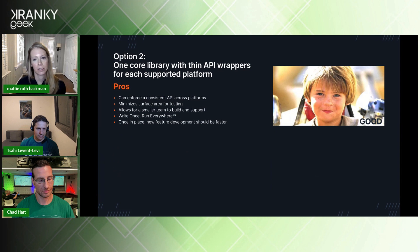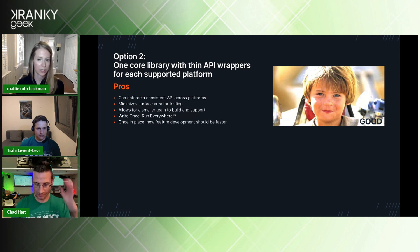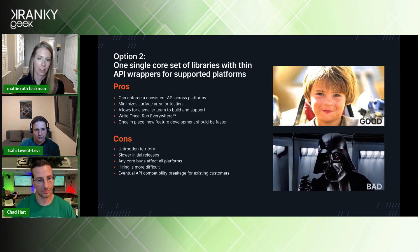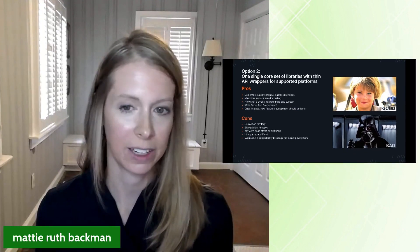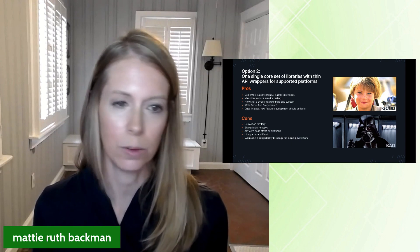Option two is to build one core library with just a thin set of API wrappers for every platform you want to support. This has the benefit of enforcing a consistent API across platforms, minimizing and unifying the majority of testing to one codebase with minimal platform-specific testing, and allowing a smaller team to build and support it. Any new feature built is immediately or nearly immediately available on all platforms, and once the core library and architecture are in place, new feature development should be faster. The downsides are untrodden territory with unsolved problems, all platform releases are dependent on the core so initial releases will be slowed, any core bugs affect all platforms, hiring is more difficult, and eventually all existing customers must be ported to the new API.